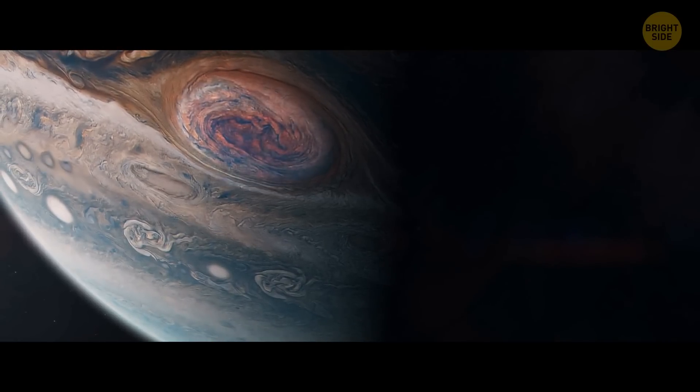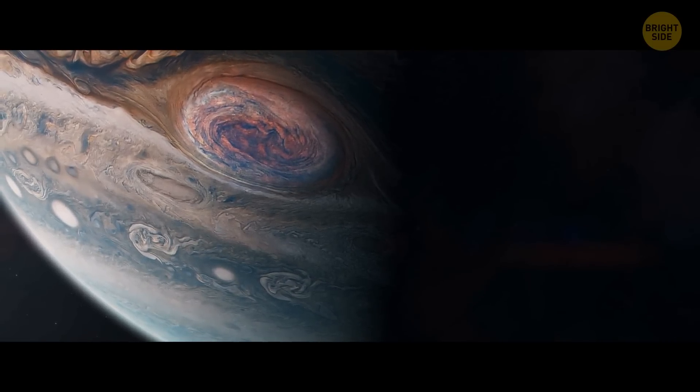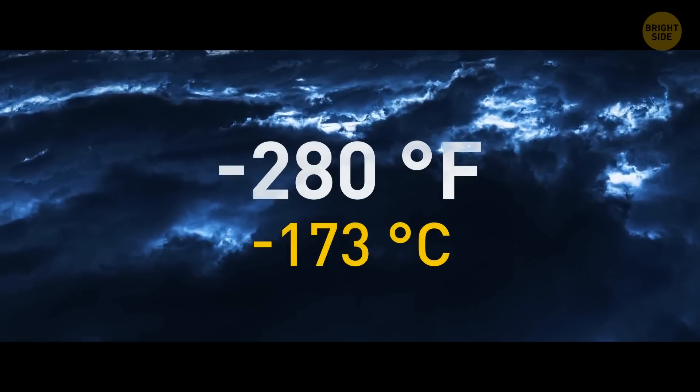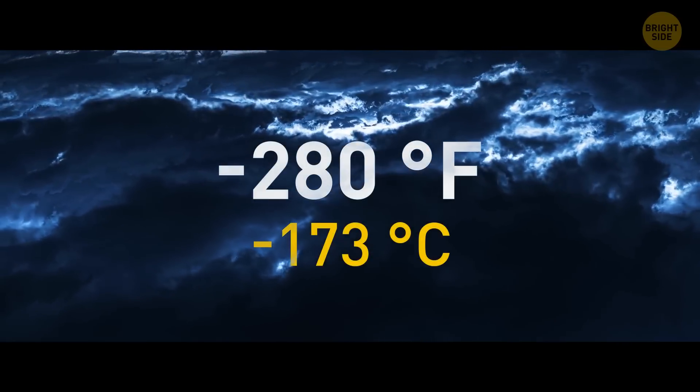The Great Red Spot is colder than the rest of the atmosphere. And keep in mind that Jupiter's temperatures are negative 280 degrees Fahrenheit in the upper cloud layers. On the other hand, the closer to the core, the hotter it gets.